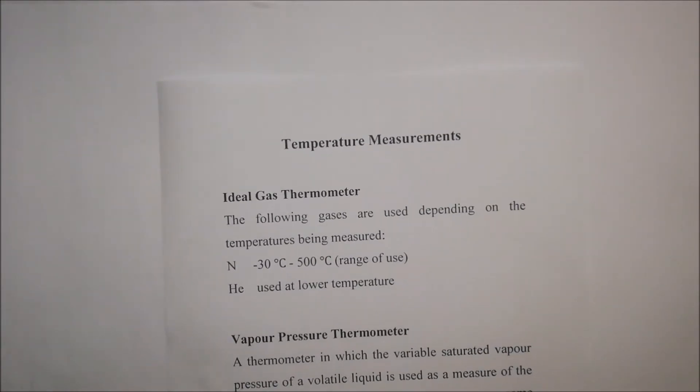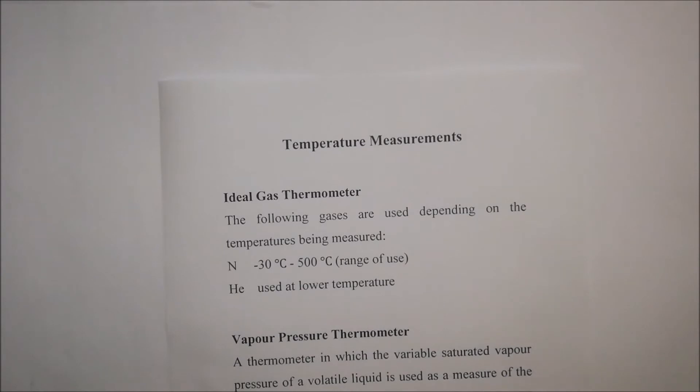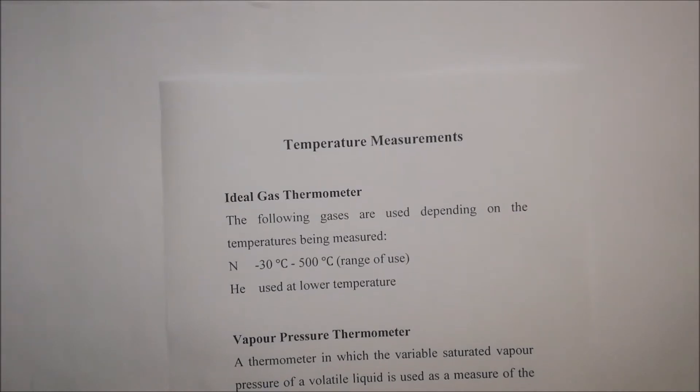The first system we're going to be looking at is the ideal gas thermometer. The following gases are used depending on the temperature being measured. If you want to measure a temperature range from minus 30 degrees Celsius to about 500 degrees Celsius, then you would use nitrogen as the gas. If you want to lower that temperature to less than minus 30 degrees Celsius, then you would use helium.